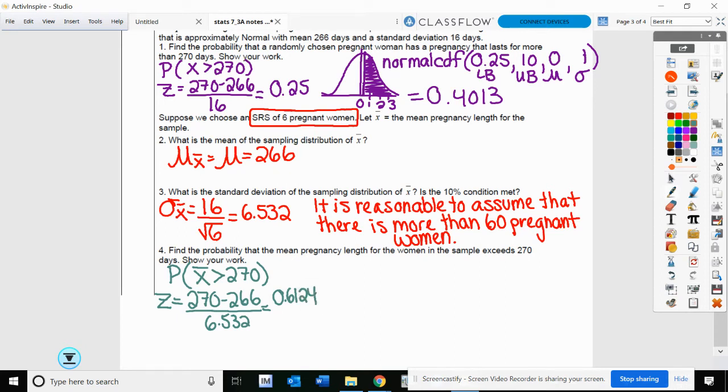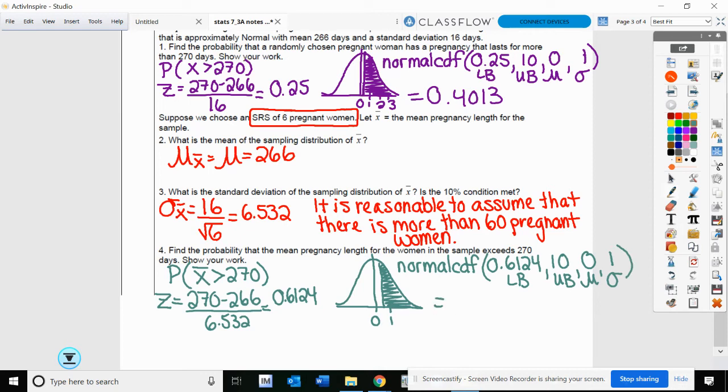Now in our sampling distribution, mean of 0, standard deviation of 1, we're now looking at 0.6124. We're going to go ahead and put in our normal CDF. Lower bound of our shading is 0.6124. Upper bound is 10. Mean is 0, and standard deviation is 1. Normal CDF 0.6124 and I get 0.2701.